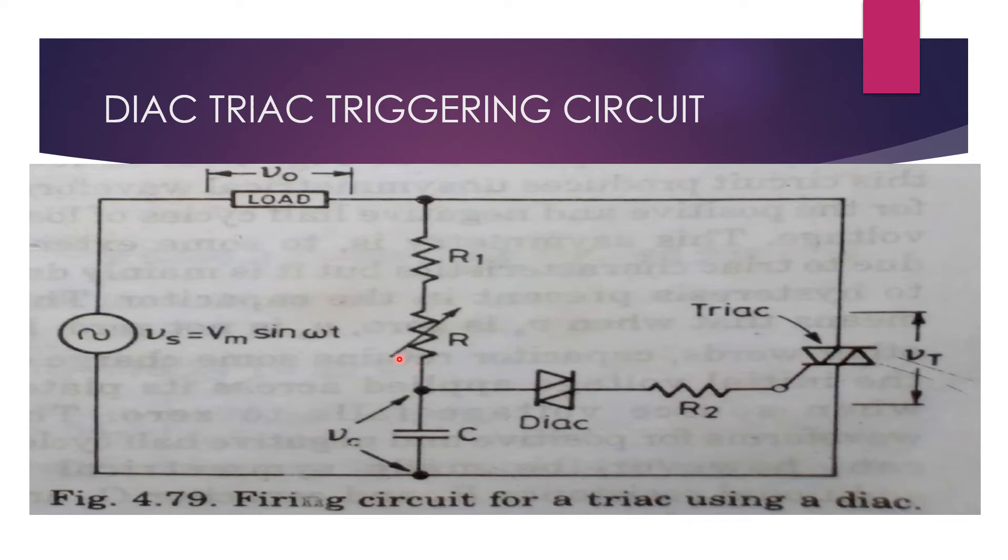When R is zero, R1 protects the DIAC and TRIAC gate from getting exposed to almost the full supply voltage.